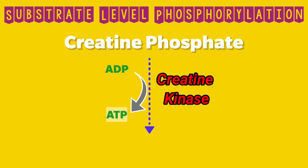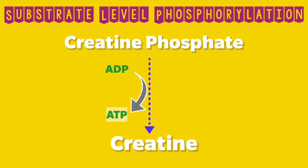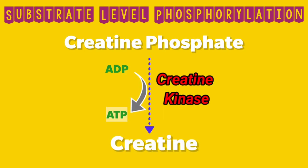The most important example is the conversion of creatine phosphate to creatine, which occurs in muscle. When a person exercises, muscle requires energy supplied by hydrolysis of ATP. With continued exercise, ATP is utilized rapidly, leading to decreased ATP levels and increased ADP levels in the muscle — indicating a low energy state. Creatine phosphate present in the muscle then transfers its phosphate to ADP, converting it back into ATP.